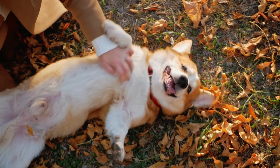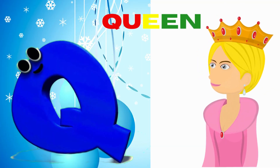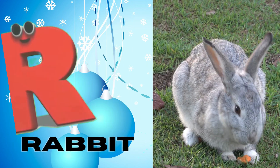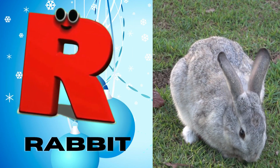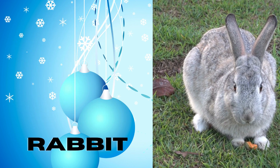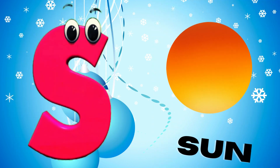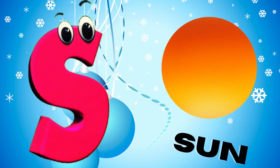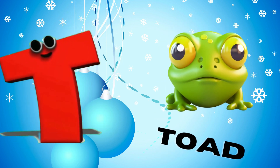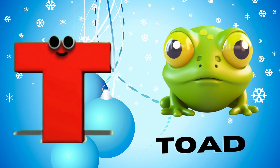Q is for queen, qu-qu-queen. R is for rabbit, r-r-rabbit. S is for sun, s-s-sun. T is for toad, t-t-toad.